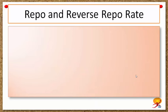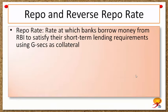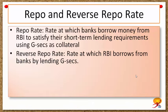Banks can resolve their short-term cash shortages via this facility. Repo rate is the rate at which banks borrow money from RBI to satisfy their short-term lending requirements, using government securities as collateral. If commercial banks have more money at their disposal, they will have more money to lend out as loans, which increases money supply. Reverse repo rate is the rate at which RBI borrows money from commercial banks by lending government securities, which decreases the money supply.